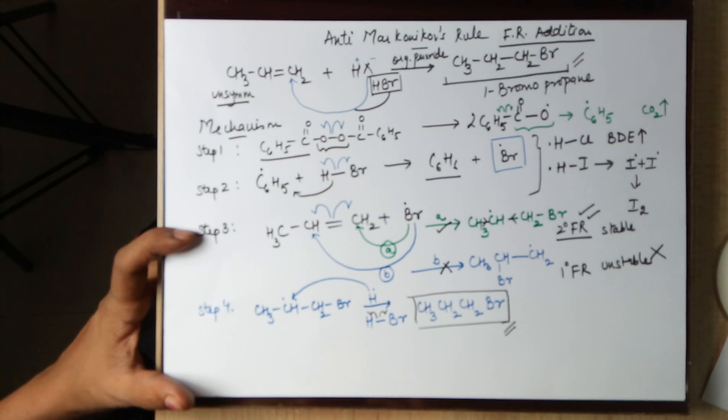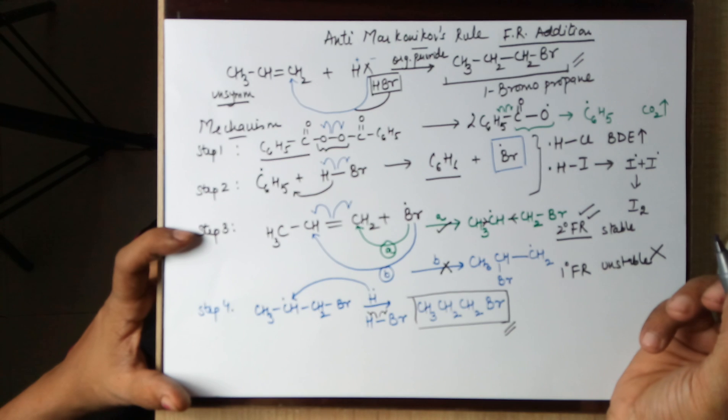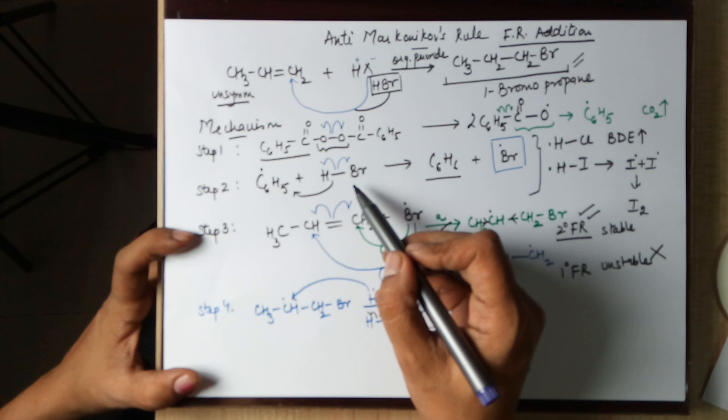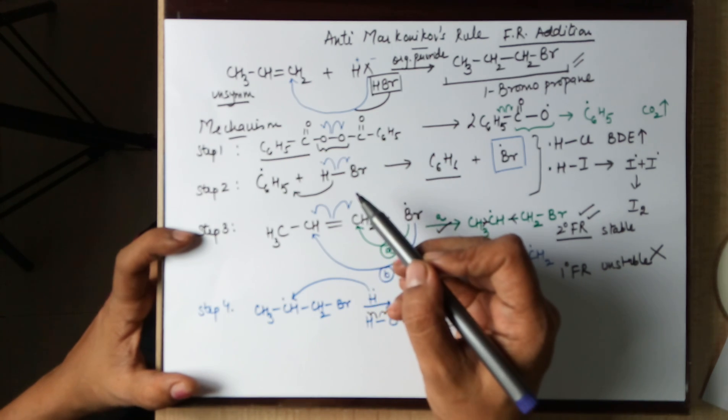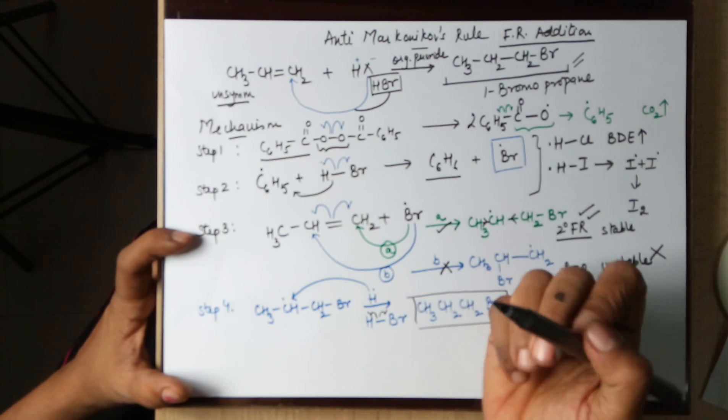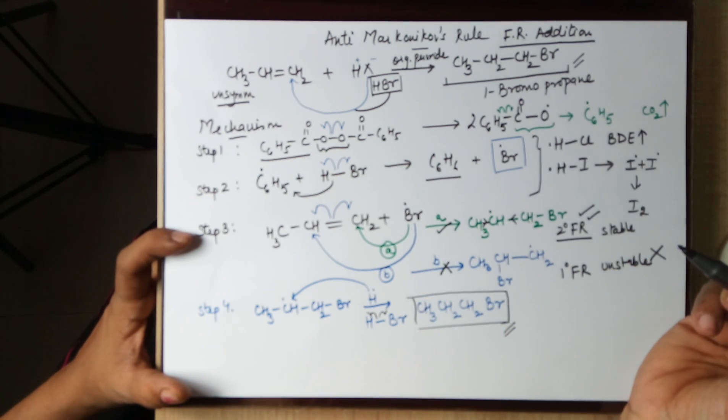But mind you, this reaction has a free radical orientation, so it is only specifically for HBr. Anti-Markovnikov's rule is only applicable to HBr, when it adds on to an unsymmetrical alkene. The mechanism was, as done by us.